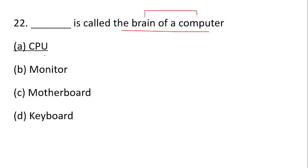This is called the brain of the computer — CPU, Central Processing Unit. CPU: C stands for Control Unit, U for ALU, M for Memory Unit.